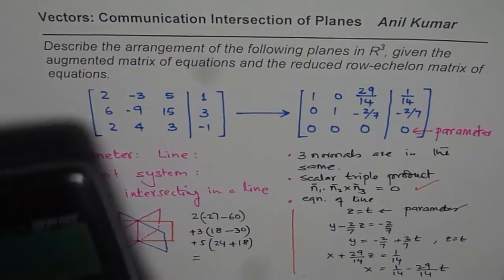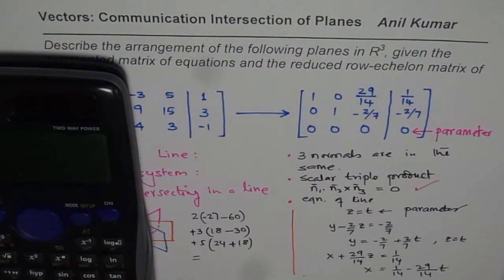You can calculate this using calculator. So we have 2 times, within bracket, -27 minus 60, bracket close, plus 3 times, within bracket, 18 minus 30, plus 5 times, 24 plus 18, bracket close, equals...